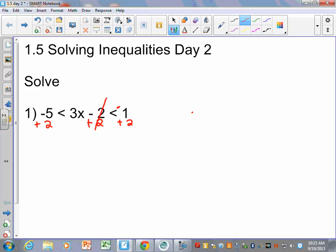So you get negative 5 plus 2 is negative 3, which is less than 3x, which is less than 3. Oh, look how nice that is. And then to solve for x, I'm going to divide by 3, but again you have to divide both sides, the outsides, by 3. If you divide or multiply by a negative, you do need to flip your signs, but in this one we didn't. So I get negative 1 is less than x, which is less than 1.